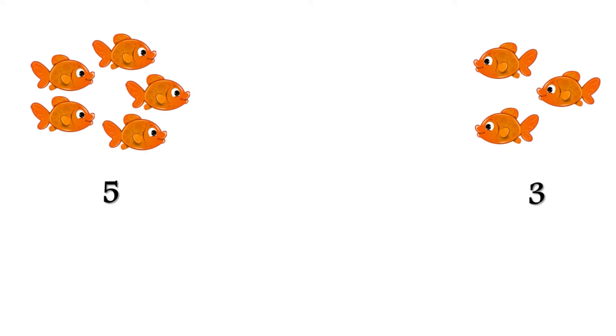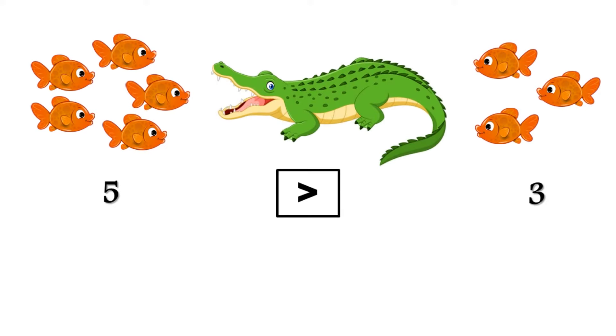Here, we have 5 fish on the left-hand side, and 3 fish on the right-hand side. On which side will the crocodile open his mouth? Yes, towards number 5. It is written as: 5 greater than 3.